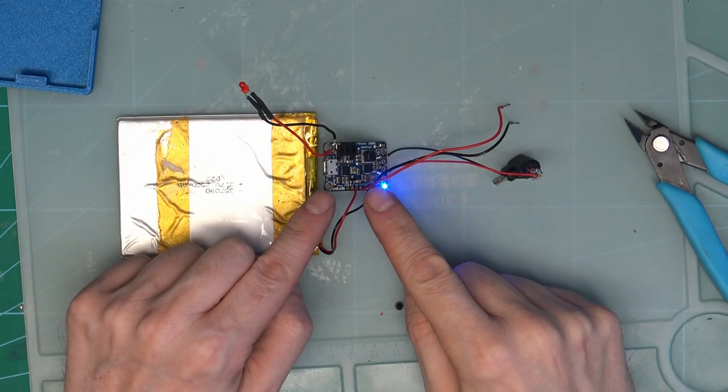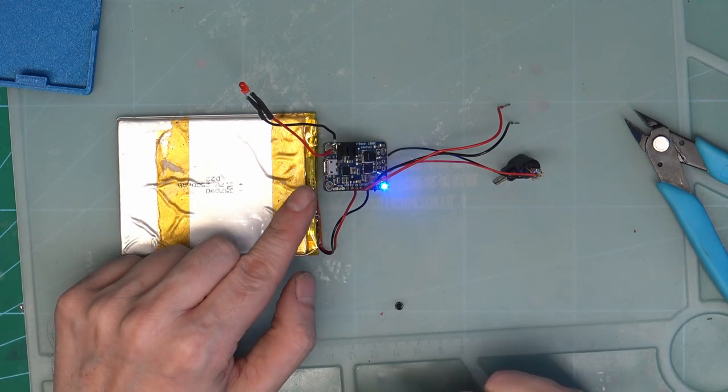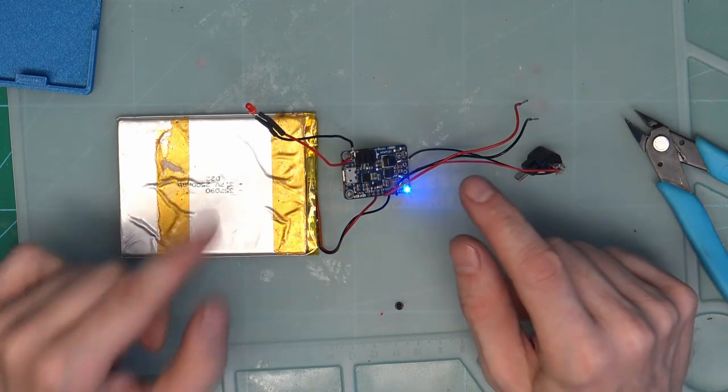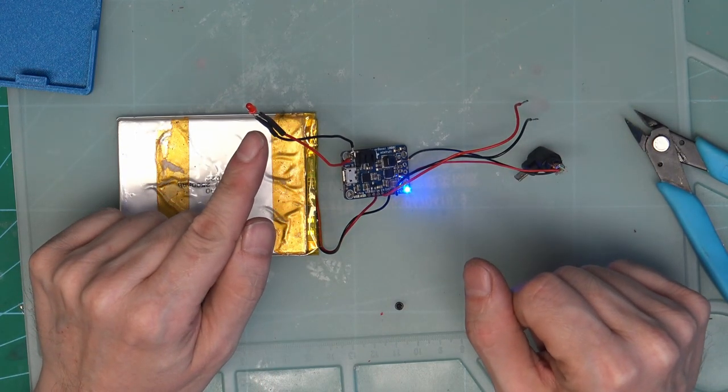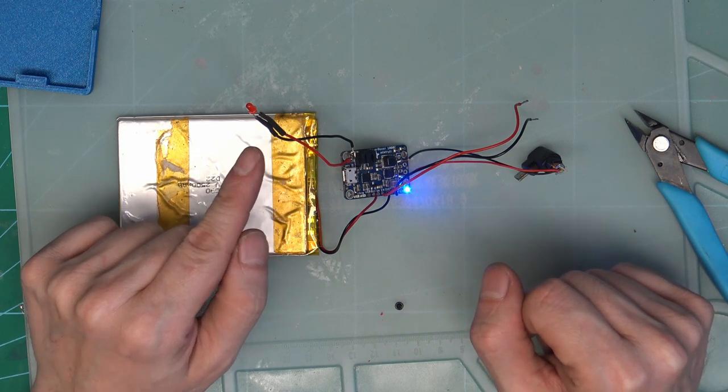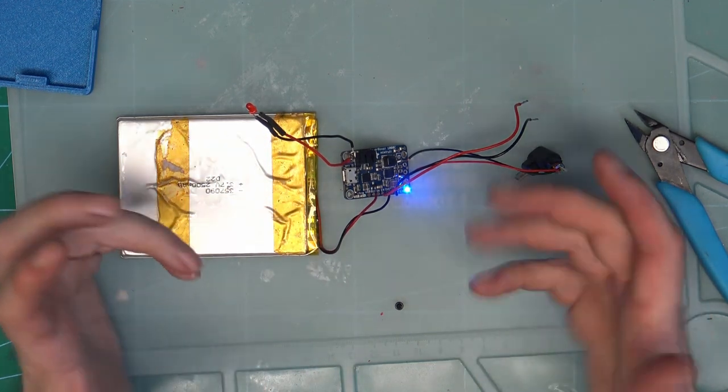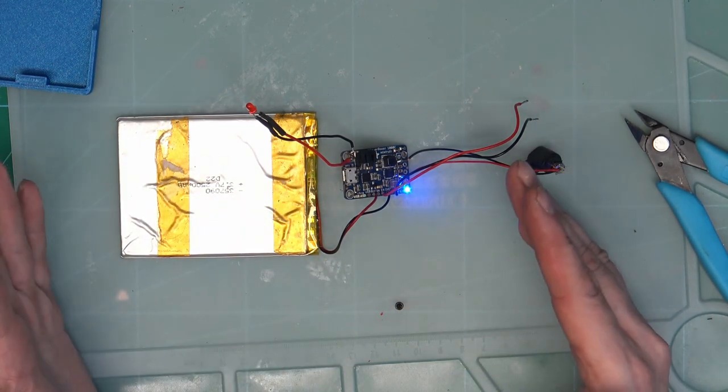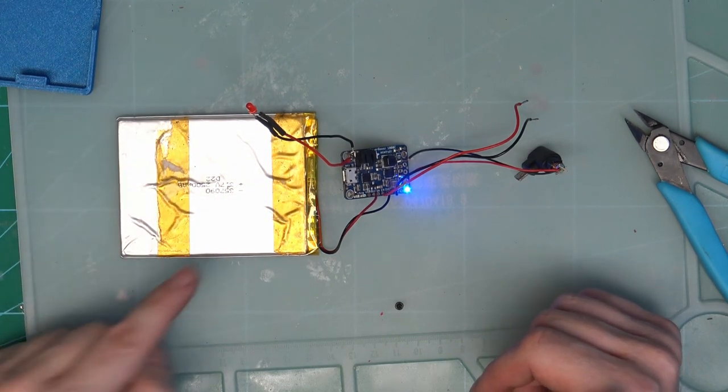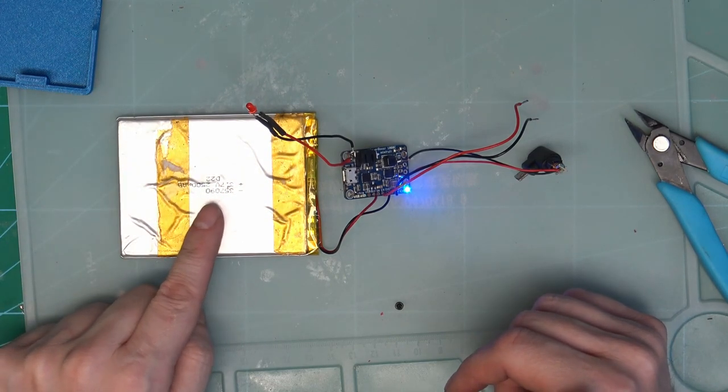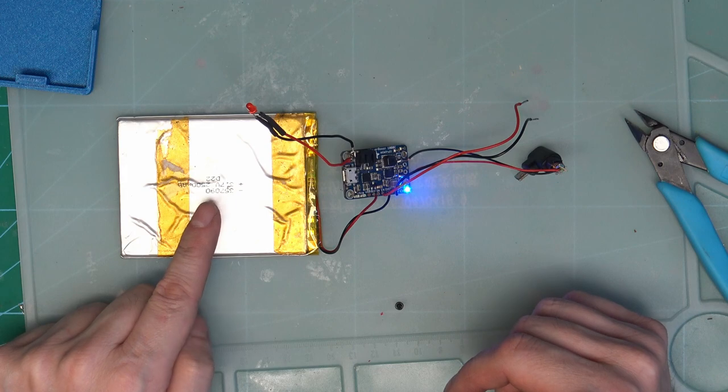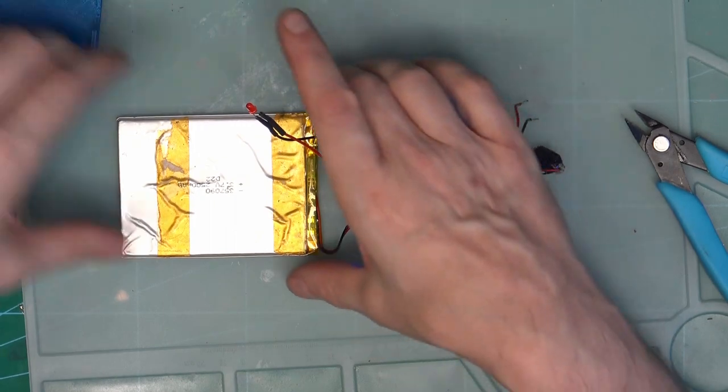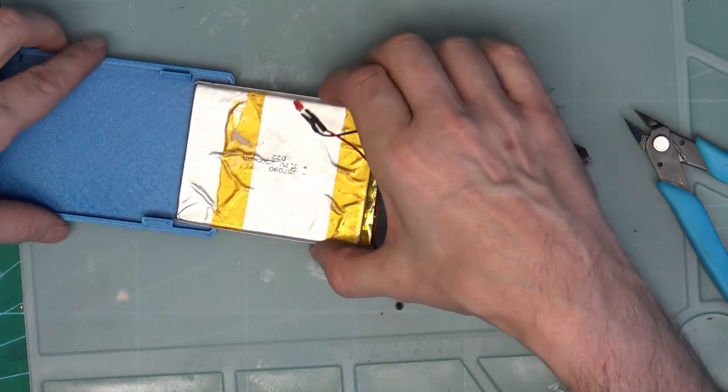We have Adafruit Power Boost 1000, right angled micro USB, red LED, which is to indicate that the battery is getting low. I don't really show any other things. We obviously know that it's on when the screen is on. It does have charge LEDs, but I just want to know when the battery is getting too low. And then a 3.7 volt LiPo, which was taken out of an old tablet that my parents gave me, which wasn't working. So I've reused it.